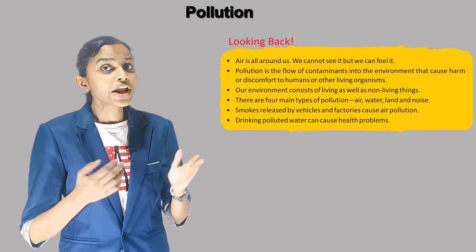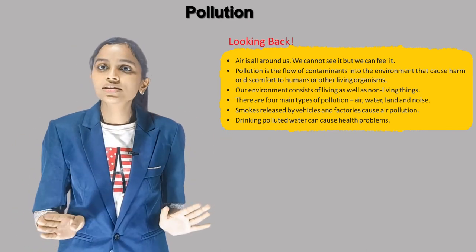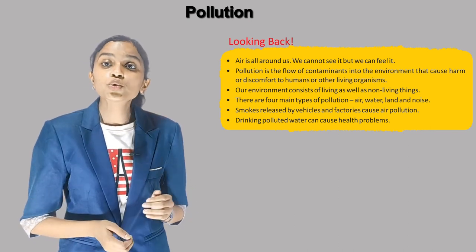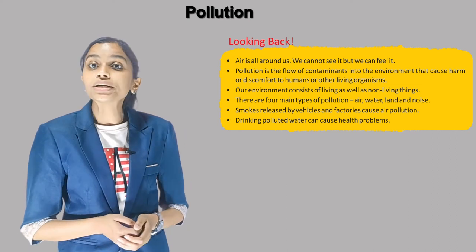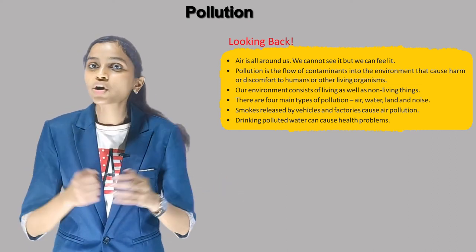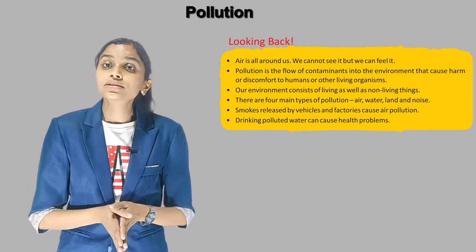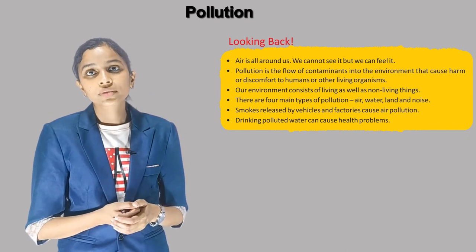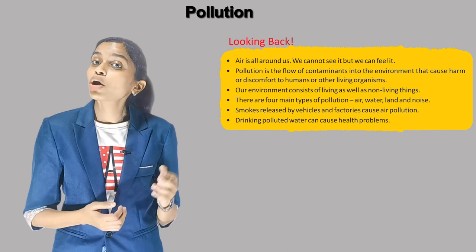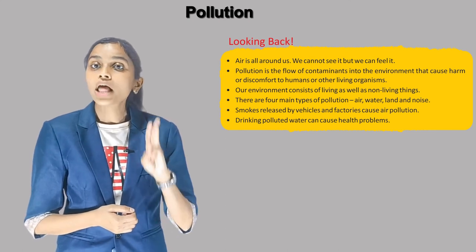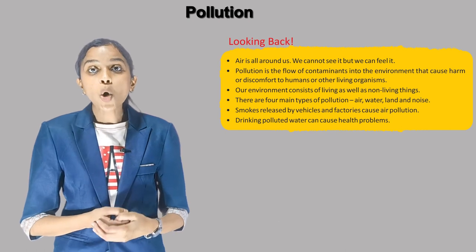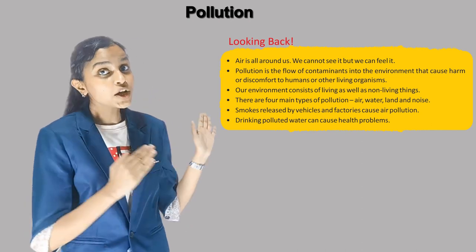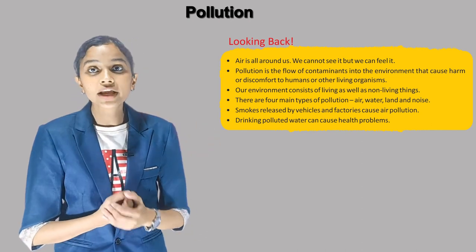Now it's time for looking back. Air is all around us — we cannot see it but we can feel it. Pollution is the flow of contaminants into the environment that cause harm or discomfort to humans or other living organisms. Our environment consists of living as well as non-living things. There are four main types of pollution: air, water, land and noise. Smoke released by vehicles and factories causes air pollution. And drinking polluted water can cause health problems.